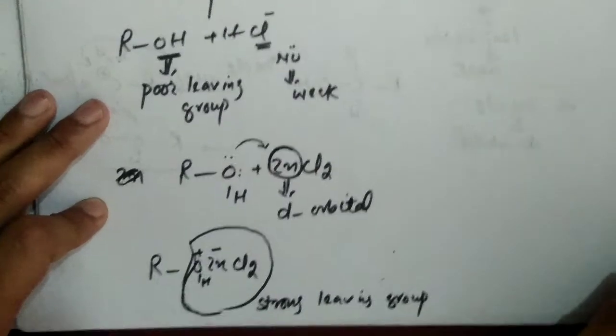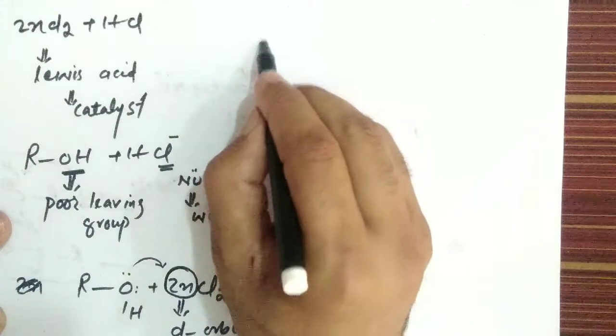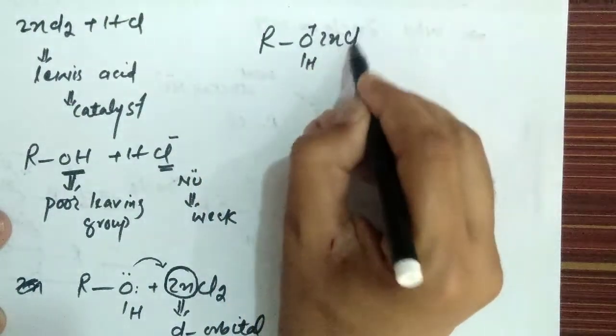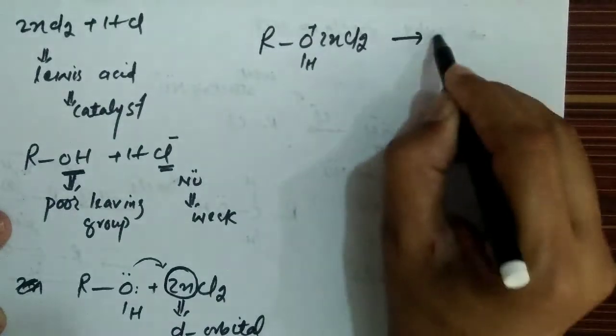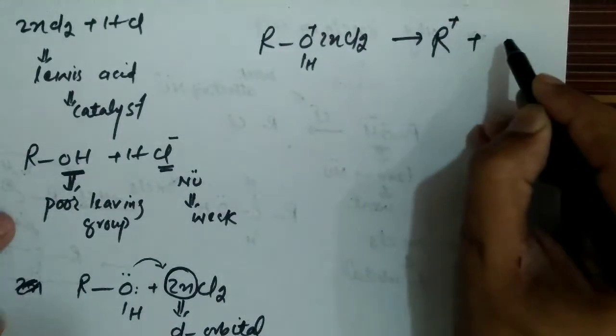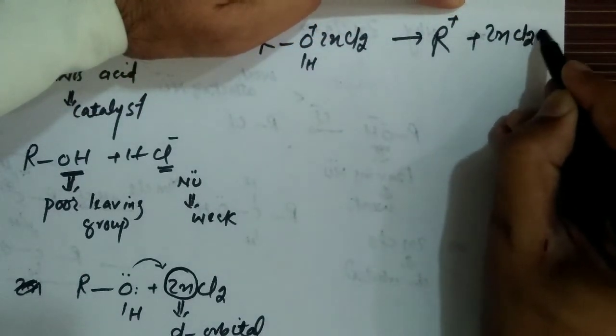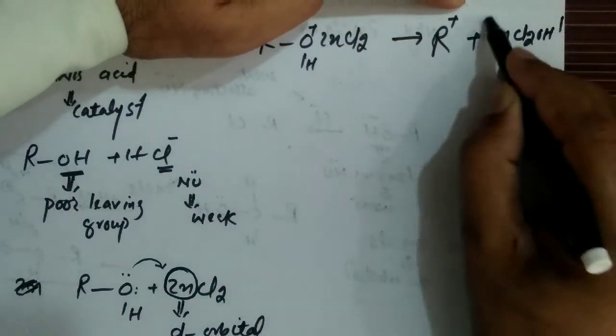Now, it departs and it produces R bond O positive ZnCl2. It forms R positive plus ZnCl2-OH whole minus.